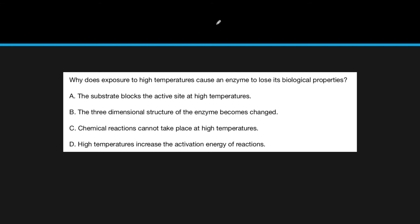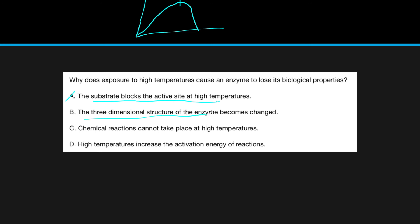Here's another example of a question: why does exposure to high temperatures cause an enzyme to lose its biological properties? We know from the graph that the rate will increase, reach its peak, and then decrease. Why? Because increasing temperature breaks those bonds between the molecules and causes the protein to unravel. The substrate blocks the active site at high temperatures — that doesn't make sense, there's no correlation. The three-dimensional structure of the enzyme is changed — yes, that's it, because those bonds break and the protein starts to unravel. Chemical reactions cannot take place at high temperatures — quite the opposite. High temperatures increase the activation energy of reactions — that's not true either. That leaves us with B.